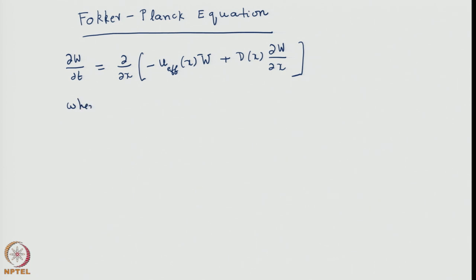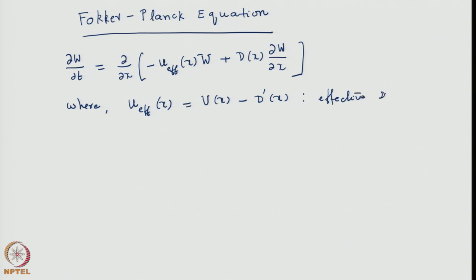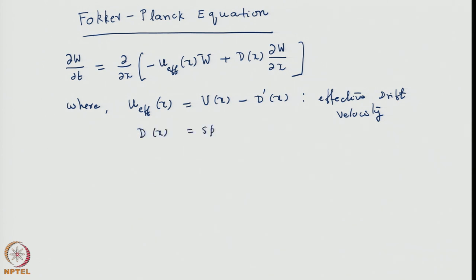Here, u_effective of x was defined as u(x) — where u is some drift velocity — minus d-prime(x), where primes denote differentiation with respect to the argument x. So d-prime is basically d/dx of d. This is the effective drift velocity, and d(x) is the space-dependent diffusion coefficient.